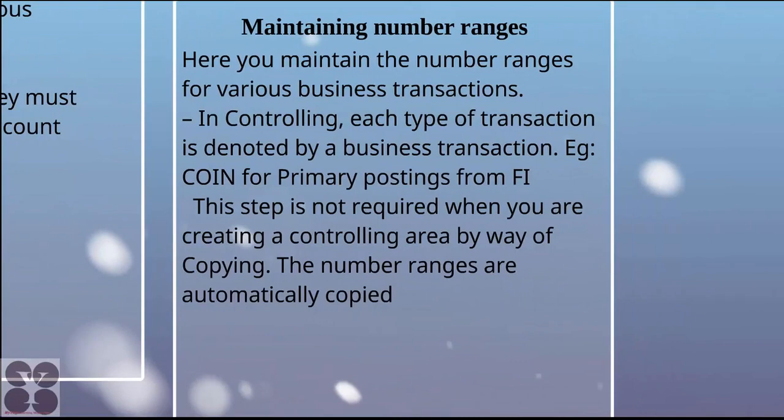When maintaining number ranges, you maintain number ranges for various business transactions in controlling. Each type of transaction is denoted by a business transaction — for example, COIN, which stands for primary posting from FI. This step is not required when you are creating a controlling area by copying, as the number ranges are automatically copied.